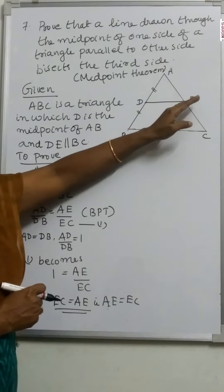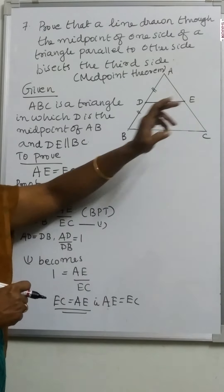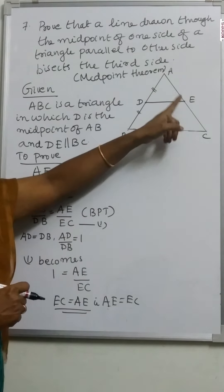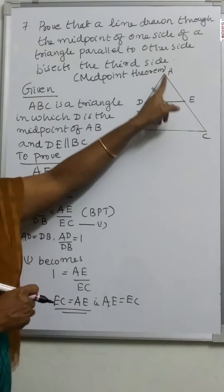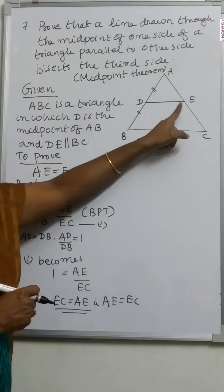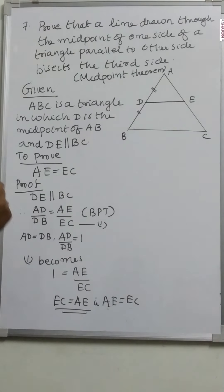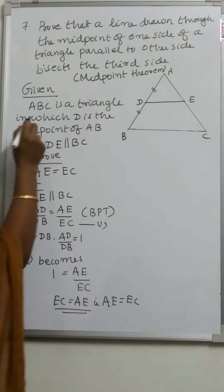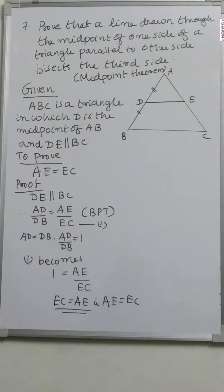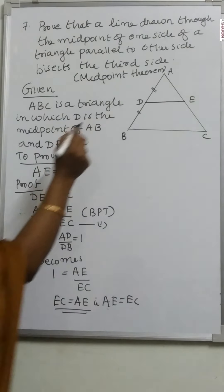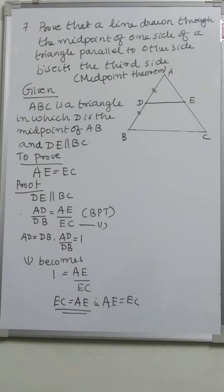Given: ABC is a triangle in which D is the midpoint of AB and DE is parallel to BC. D is the midpoint of AB means AD is equal to DB. We have to prove that AE is equal to EC.